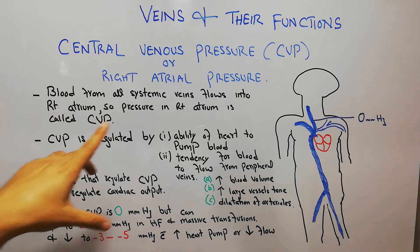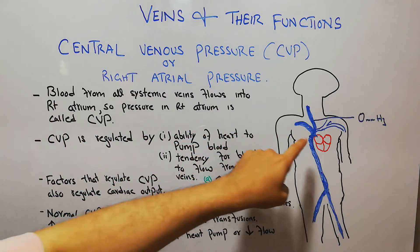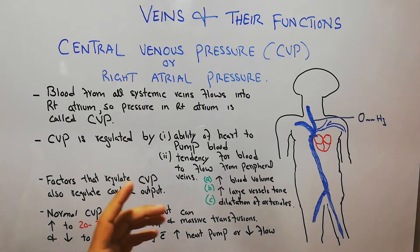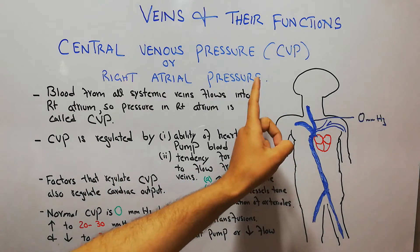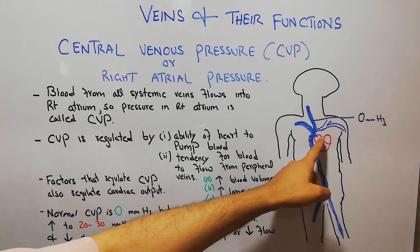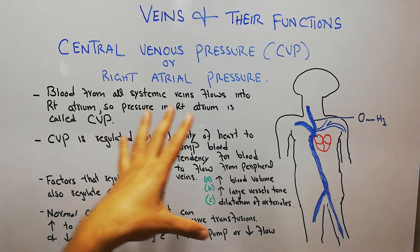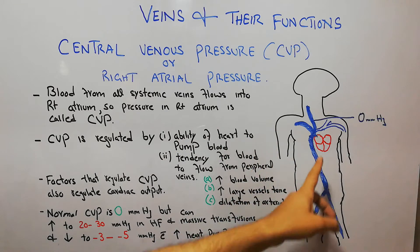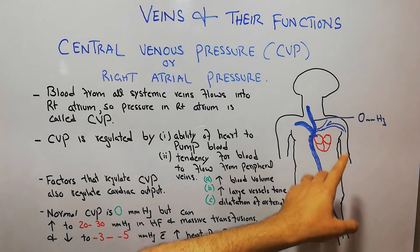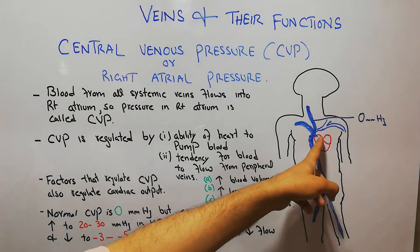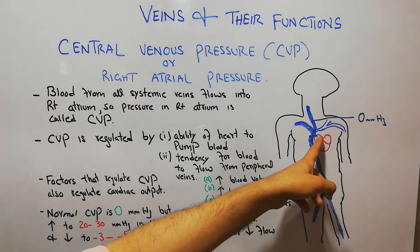The CVP, central venous pressure, or the right atrial pressure is simply the pressure in the right atrium of the heart. The blood vessels basically bring the deoxygenated blood into the right atrium of the heart.